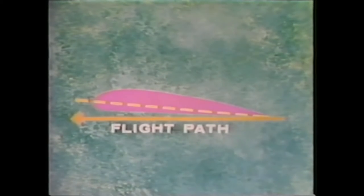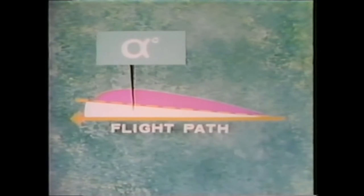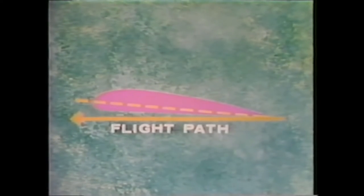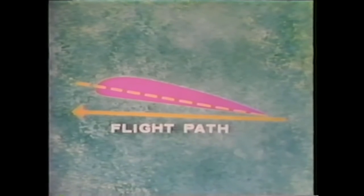The center line, or chord line, of the airfoil, however, even in level flight, forms a small angle with the flight path. We call this angle the angle of attack, and we have given it the symbol alpha. When we increase alpha, we increase the pressure difference, which creates more lift.